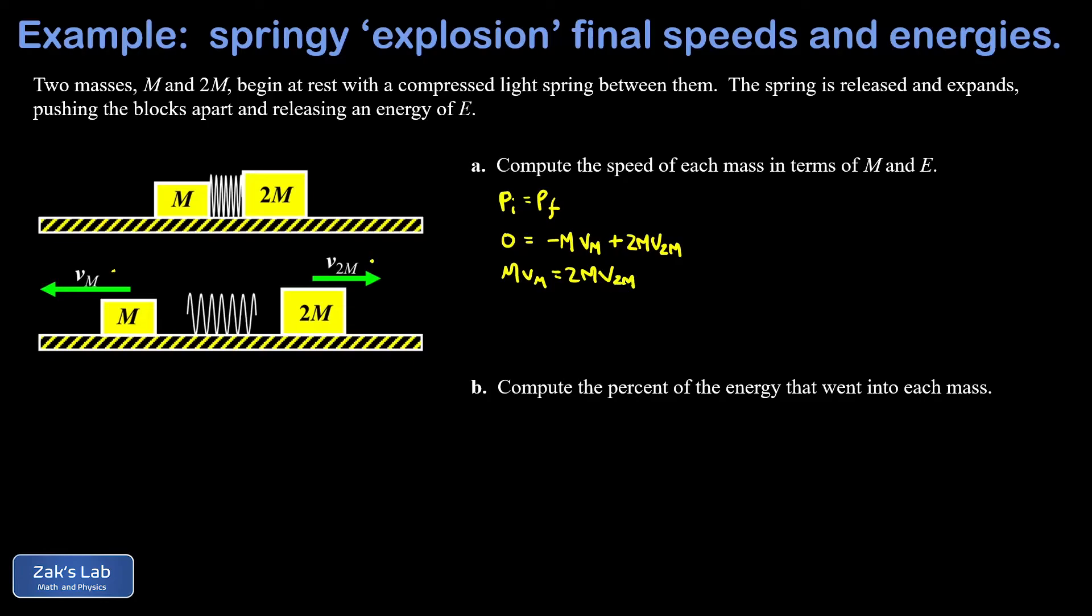Now we can cancel the m's and get a nice relationship between my two velocities. I have vm is 2 v2m, in other words the smaller mass is moving twice as fast in the final state.